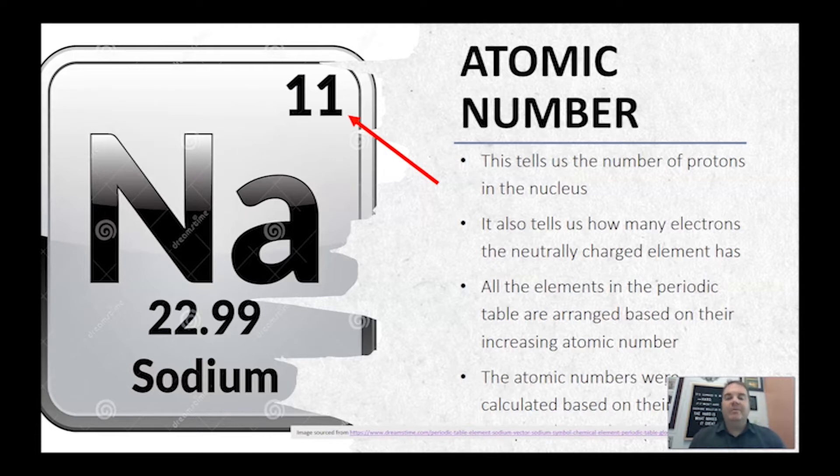So the periodic table, when looking at the periodic table, you might have noticed some numbers on there, a smaller number and a bigger number. You'll notice that every atom as you go across the periodic table increases by 1. That's what's called the atomic number. So that atomic number tells us the number of protons in the nucleus. So every atom differs in terms of the number of protons it has in the nucleus. It also tells us how many electrons a neutrally charged element has. So by that I mean if you're just looking at a sodium atom by itself you're going to have 11 protons and 11 electrons.